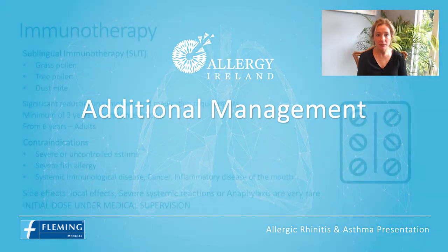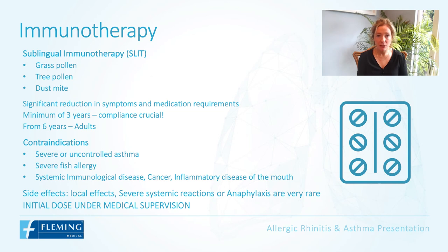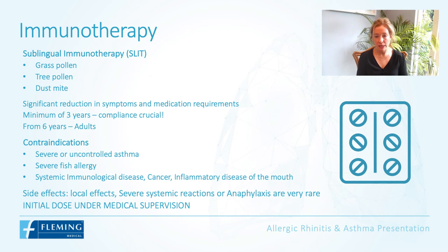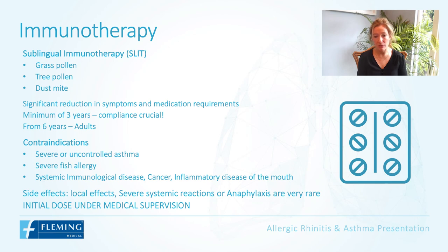For additional management, immunotherapy involves giving a minuscule amount of the allergen — such as grass pollen — to encourage the immune system to build tolerance, similar to a vaccination. There is sublingual and subcutaneous immunotherapy; sublingual is favoured in Ireland, available for grass pollen, tree pollen, and dust mite. At least three years of treatment are required and compliance is crucial. It is suitable from age six and up. Contraindications include severe or uncontrolled asthma, severe fish allergy, and any systemic immunological disease or cancer.